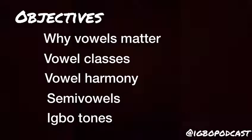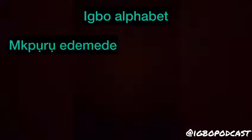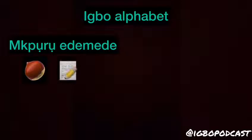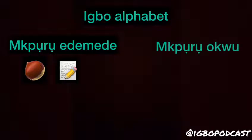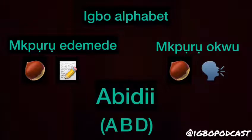Without further ado, let us all welcome Uchenna. So the Igbo alphabet, which can be referred to as Mbure Demede, which translates to 'the seed of writing,' or Mburoku, 'the seeds of speech,' or just simply Abedee.